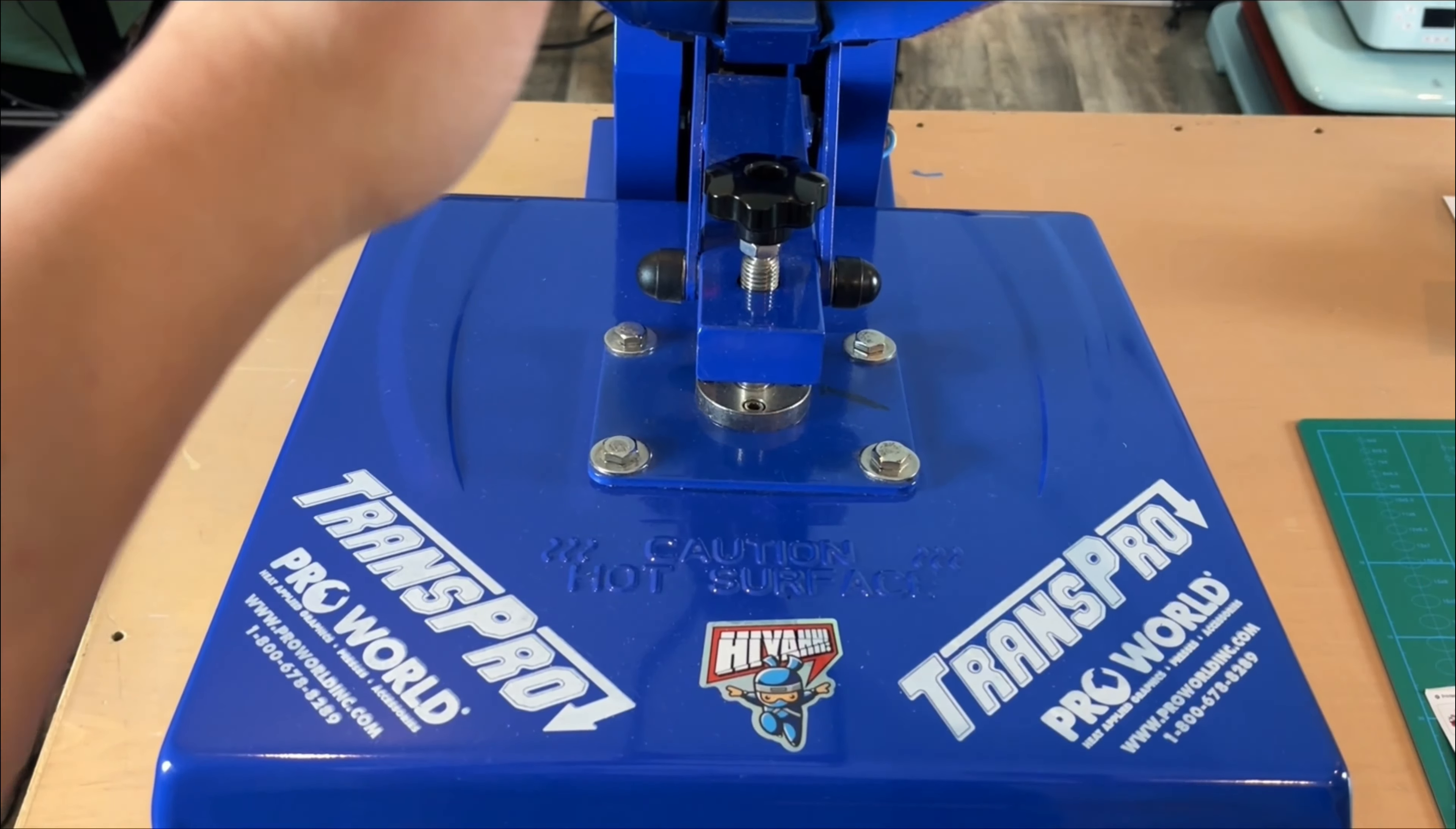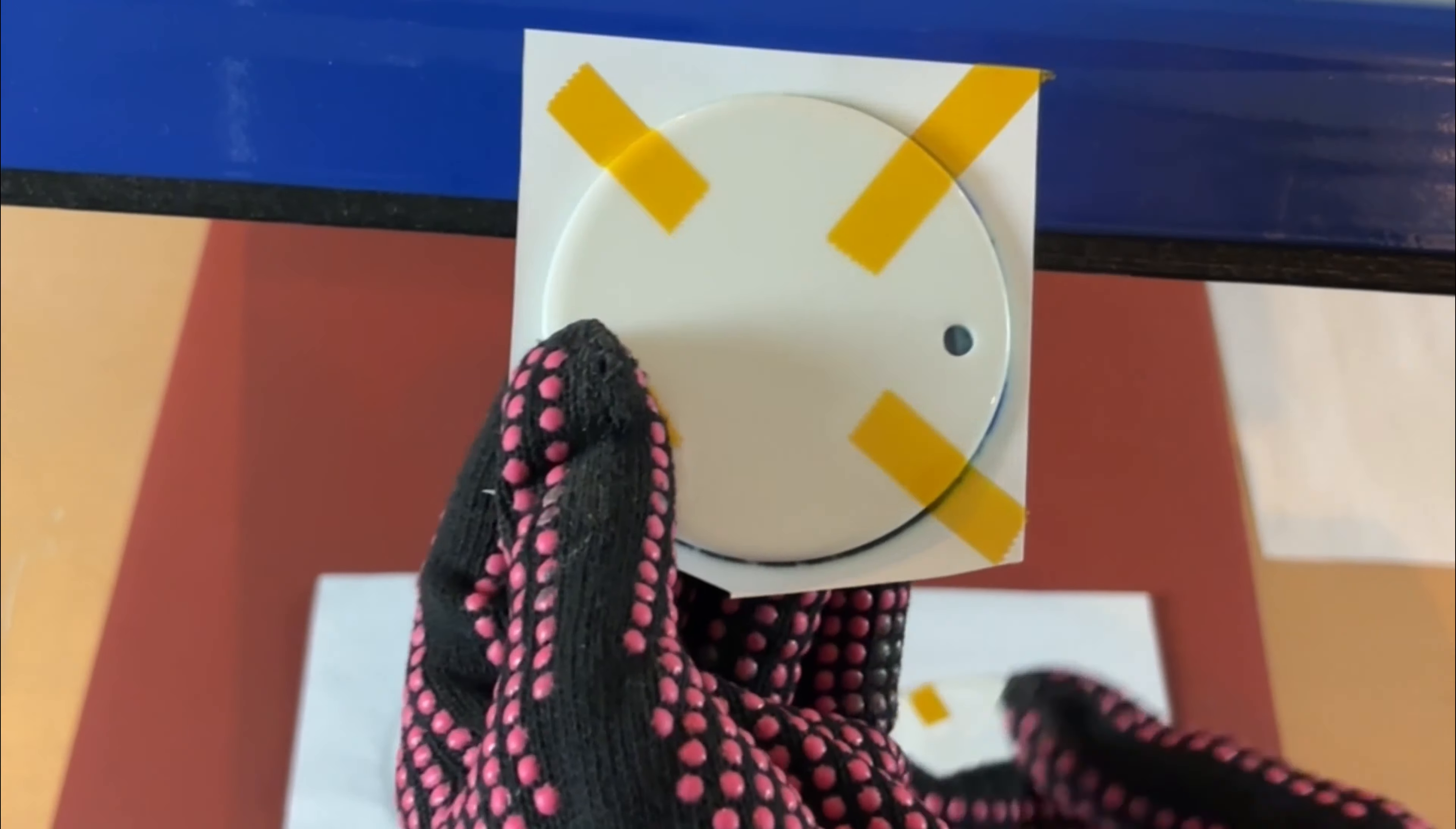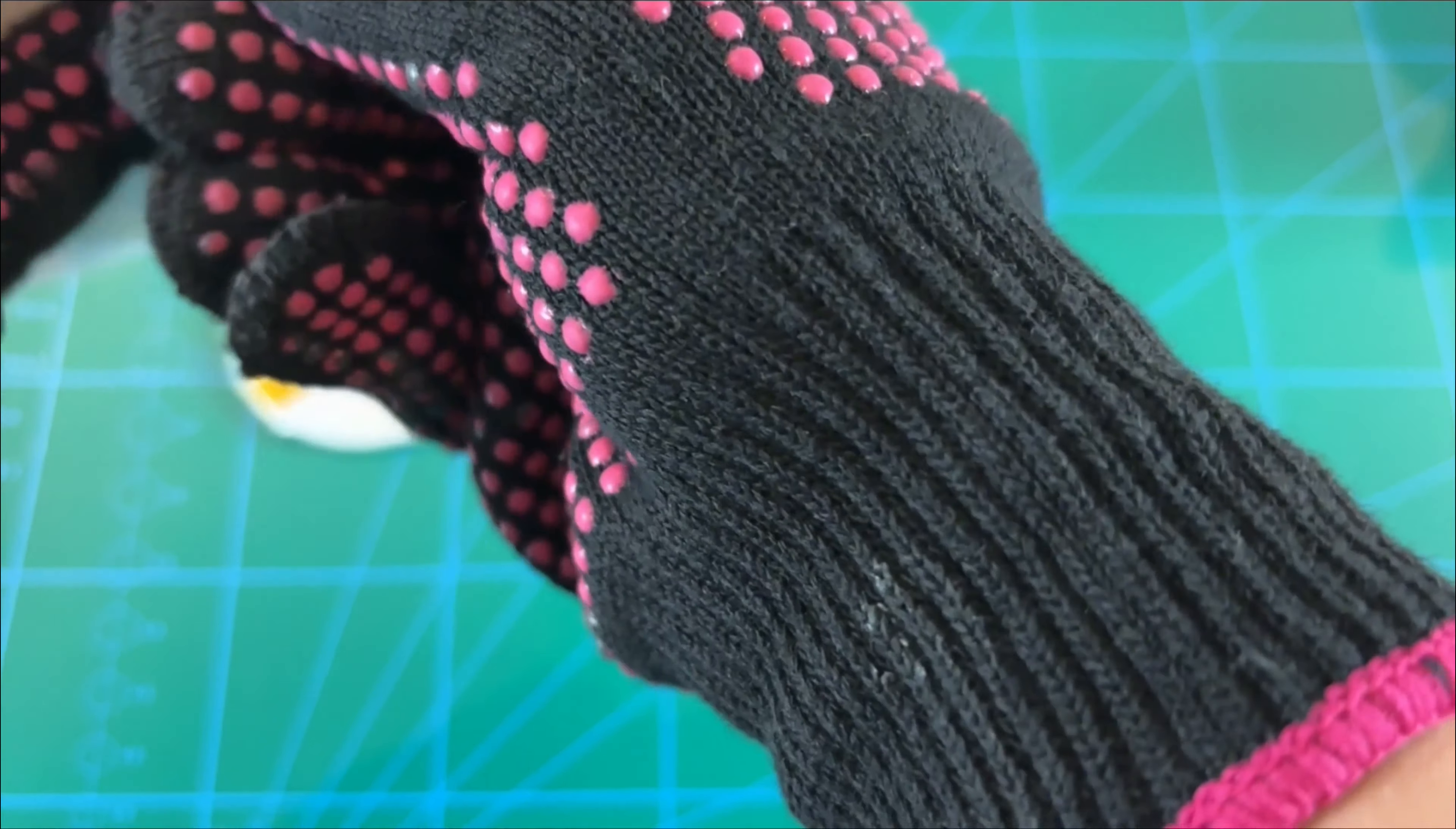When you pull these out, make sure that you take this paper and do not apply this to any other sublimation project because there's a little bit of ink that has transferred, which will in turn transfer onto a different project. I cut those up and use them for scrap paper. And from one creator to another, I know that these mitts are not the cutest things, but please wear them because the first time you grab ahold of these puppies with bare hands, instant regret. There is no right or wrong way to remove the sublimation paper, but do not go in there with a pick because you will scratch the ceramic and it is pretty noticeable.